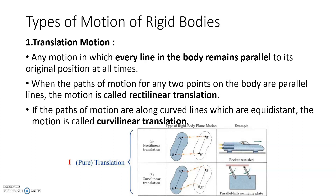Now let's see different types of rigid body motion. The first type is translation motion. In translation motion, every line in the body remains parallel to its original position at all times, as you can see in the diagram. Consider line AB as the initial position and A'B' as the final position — both AB and A'B' are parallel, confirming translatory motion.